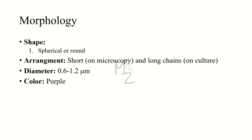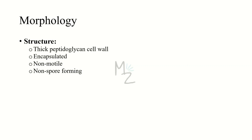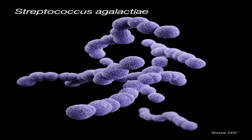Morphology: strep agalactiae is spherical or round in shape, arranged in chains. Under the microscope we see short chains, but on culture they form long chains. The diameter of streptococci varies from 0.6 to 1.2 micrometers. It is purple in color because it is gram positive — it has a thick peptidoglycan cell wall that retains the dye. It is encapsulated, non-motile, and non-spore forming.